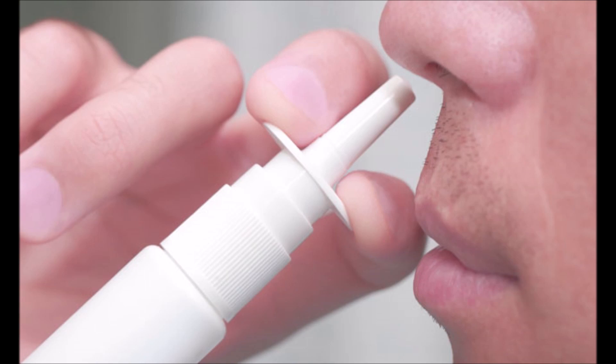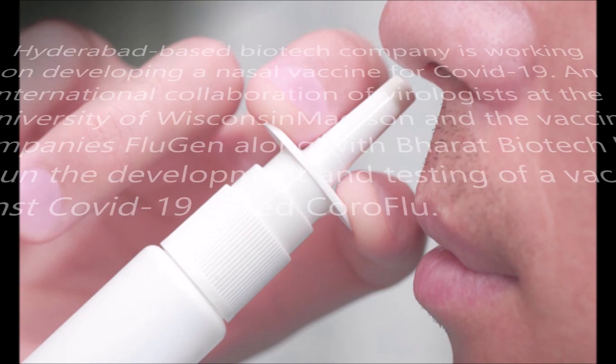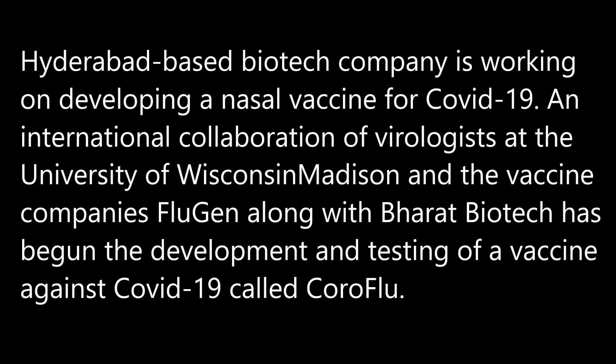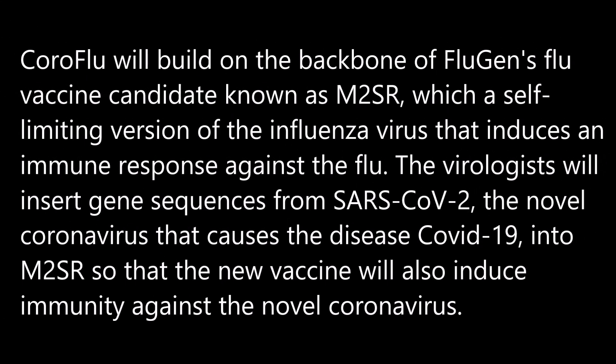A Hyderabad-based biotech company is working on developing a nasal vaccine for COVID-19. An international collaboration of virologists at the University of Wisconsin-Madison and vaccine companies FluGen along with Bharat Biotech has begun the development and testing of a vaccine against COVID-19 called Coroflu. Coroflu will build on the backbone of FluGen's flu vaccine candidate known as M2SR, a self-limiting version of the influenza virus that induces an immune response against the flu. The virologists will insert gene sequences from SARS-CoV-2 into M2SR so that the new vaccine will also induce immunity against the novel coronavirus.